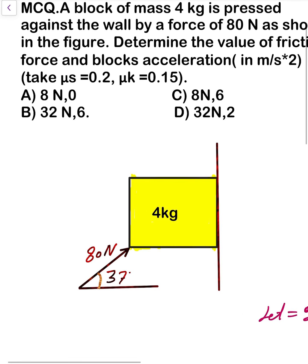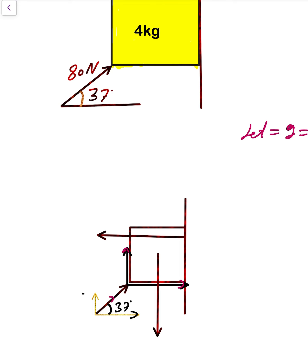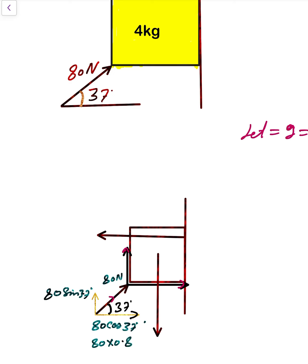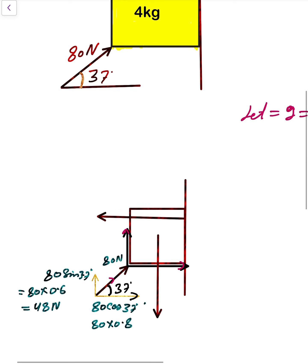First, draw the free body diagram of the block. The 80 Newton force is resolved into components: the horizontal component is 80 cos 37° = 80 × 0.8 = 64 Newton, and the vertical component is 80 sin 37° = 80 × 0.6 = 48 Newton.